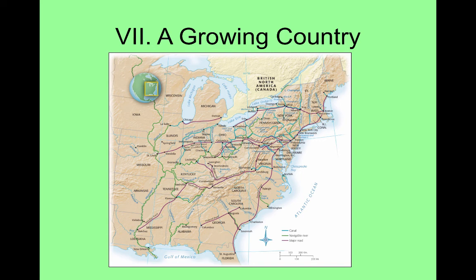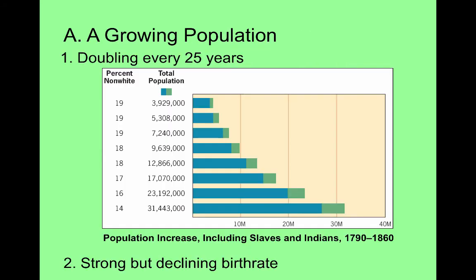Today we're going to be looking at a growing country. In our series of notes for our US History class, this is going to span the time from about 1815 to 1850. America is not only growing west, as we've talked about in previous lectures, but it's also growing in population and the economy. We see that the canal network and the river network in America is growing, especially in the north and the west, a little bit less in the south. So we'll start with a growing population and some demographic change.